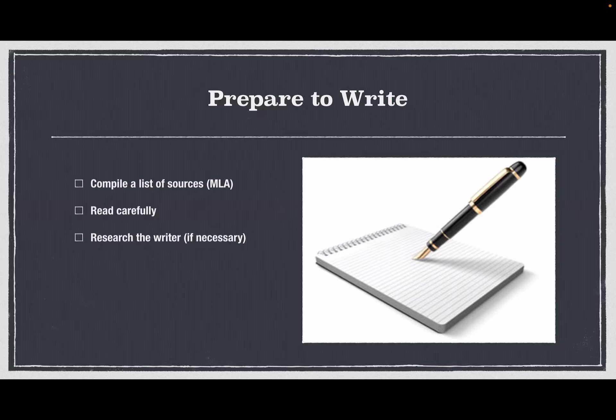Research the writer if necessary. If you determine that you're not sure about the credibility of the source based on other factors, then you might have to do a little googling of the author's name just to see if this author is reputable. Summarize the work in a sentence or two. Try to describe it as objectively as possible. Even though we're writing an evaluative annotation, you can evaluate the central point of the work better by stating it clearly first.